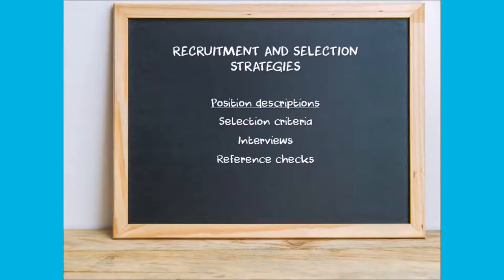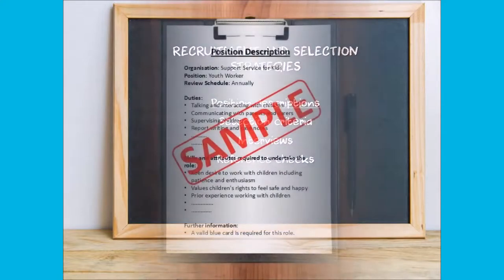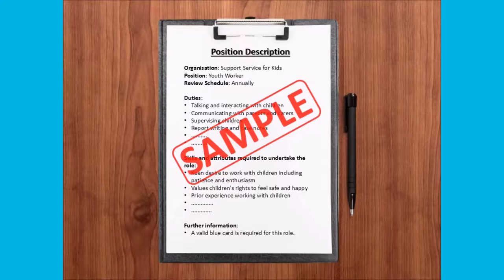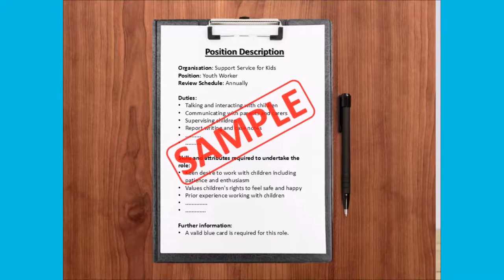For every role type in your organization you should have a clear position description, which can be used for internal and advertising purposes. It should clearly outline the duties, skills, experience, qualifications and responsibilities required of the role. You should also clearly state the blue card screening requirements for the role you are advertising.